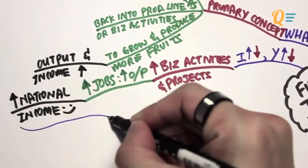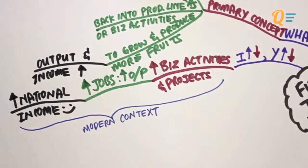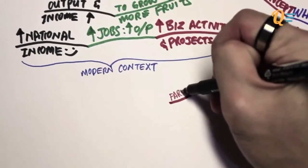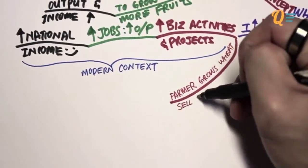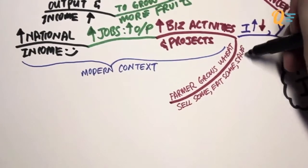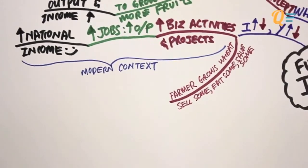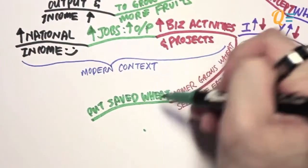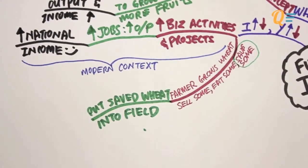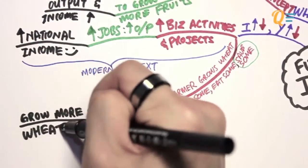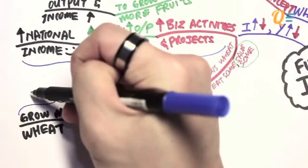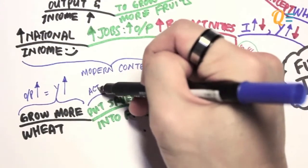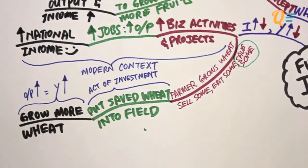I've explained investment in a very modern context. Now let's talk about it in a more traditional context. Imagine a farmer that grows wheat. He's going to sell some of that wheat, eat some of it, and save some of it. The wheat that the farmer saves, he's going to put back into the field where he can actually grow more wheat for the next season. Growing more wheat is simply output increasing, giving the farmer more income — and the activity of putting saved wheat back into the field is an act of investment.